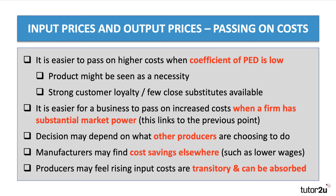Secondly, it's easier for a business to pass on increased costs when a firm has market power and dominates the market — this links to price elasticity of demand. Bringing in a little game theory, the decision may depend on whether other producers are also choosing to pass on higher costs. Alternatively, a manufacturer might find cost savings elsewhere, trimming labour costs, or they may feel these higher costs are essentially temporary — transitory — and a profitable producer may decide to absorb them in lower profits before passing them on.